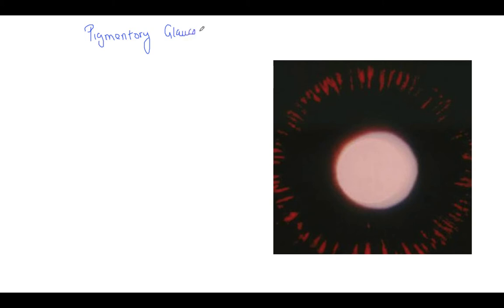This is iris trans-illumination defect seen in a type of glaucoma called pigmentary glaucoma. We would study the main features of pigmentary glaucoma as it was asked in the exam. The important clinical features include Kruchenberg spindles, which are pigmented lesions seen on the corneal endothelium.